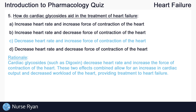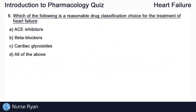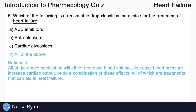Question number six: which of the following is a reasonable drug classification choice for the treatment of heart failure? The answer here is D, all of the above. All of the above medications will either decrease blood volume, decrease blood pressure, increase cardiac output, or do a combination of these effects, all of which are treatments that can aid in heart failure.